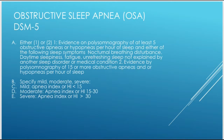Per DSM-5, OSA is diagnosed by polysomnography showing at least 5 obstructive apneas or hypopneas per hour of sleep with associated sleep symptoms such as nocturnal breathing disturbance, daytime sleepiness, or fatigue — or 15 or more obstructive apneas or hypopneas per hour regardless of symptoms. Severity is classified as mild (apnea/hypopnea index less than 15), moderate (15 to 30), or severe (greater than 30).